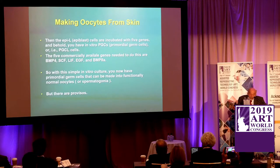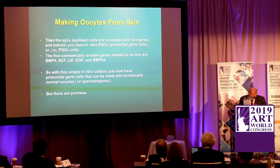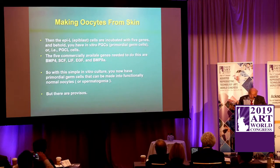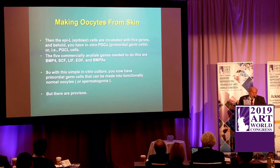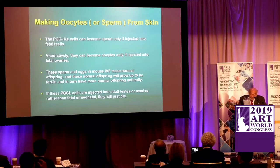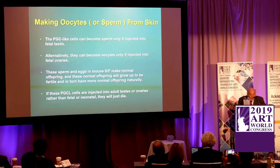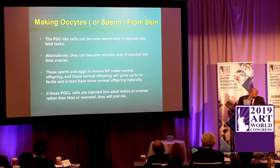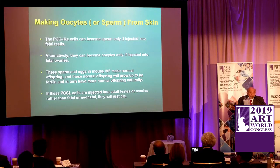These cells are incubated with five genes, and from the epiblast you get PGCs — again commercially available. With this relatively simple in vitro culture, you now have primordial germ cells that can be made into functional oocytes or sperm. However, PGC-like cells can only become sperm if injected into a fetal testis; if injected into adult testis they just die. And if you inject IPS cells that haven't differentiated into PGC-like cells, you'll get a tumor and the animal dies.